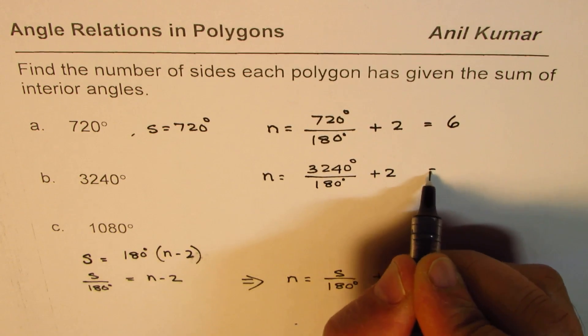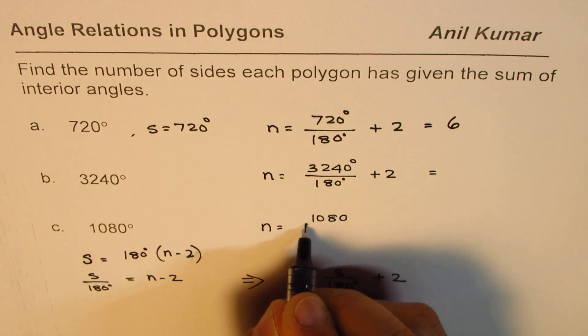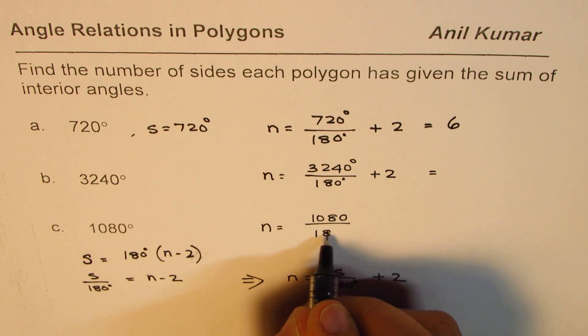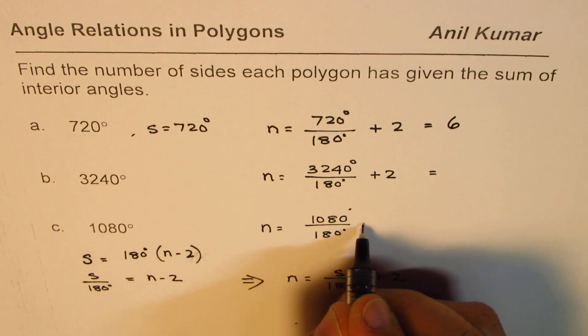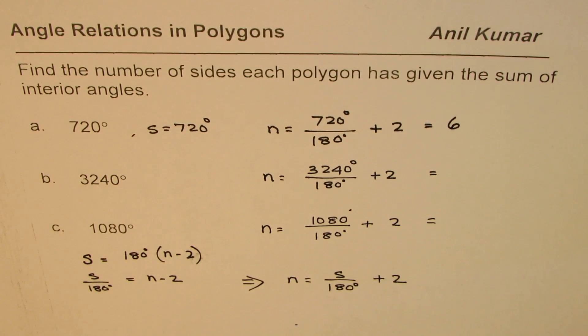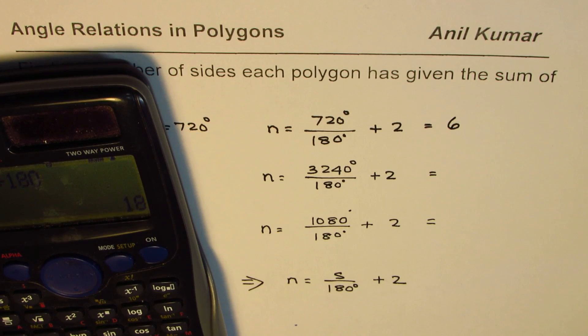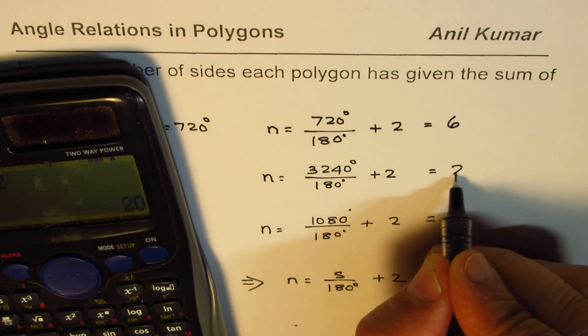For part b: 3240 divided by 180 plus 2 equals 20, so we get 20. And for part c: 1080 divided by 180, that's 6, plus 2 gives us 8.